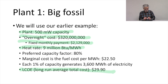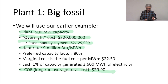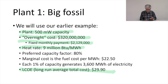The marginal cost is the fuel cost per megawatt hour, and that's $22.50. We just take our fuel cost and our heat rate and we get $22.50 per megawatt hour. Each 1% of capacity of this power plant will generate 3,600 megawatt hours of electricity.